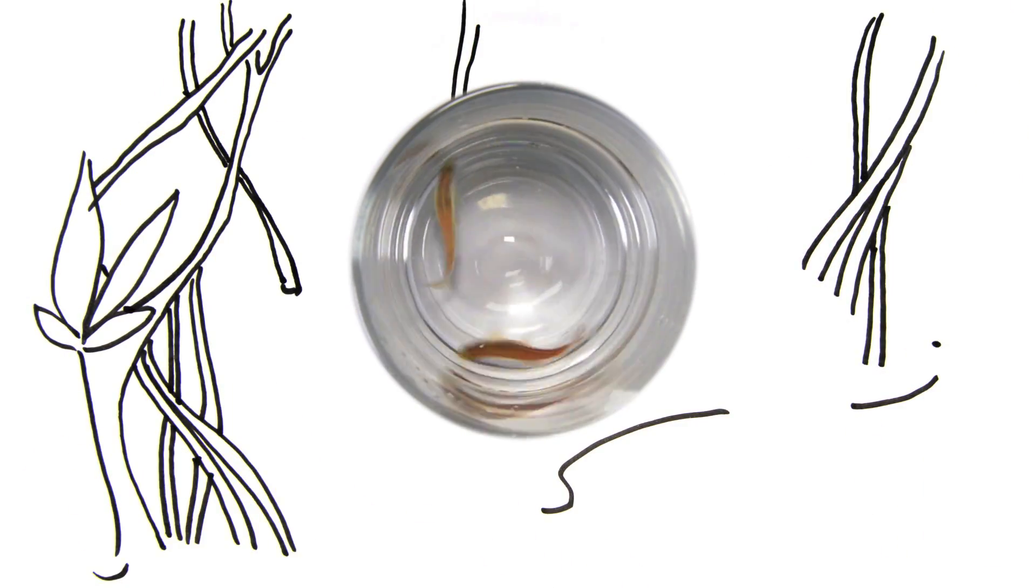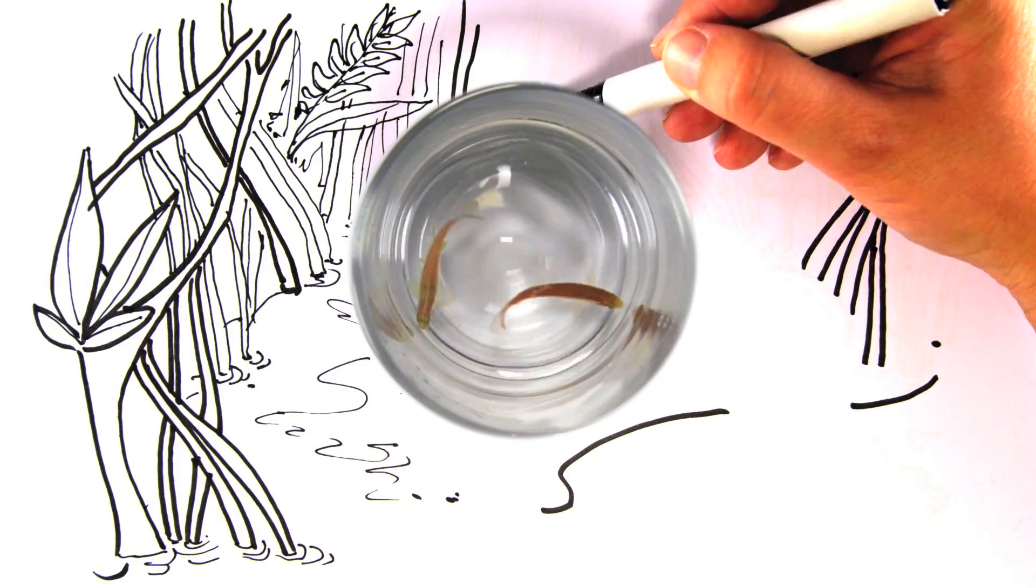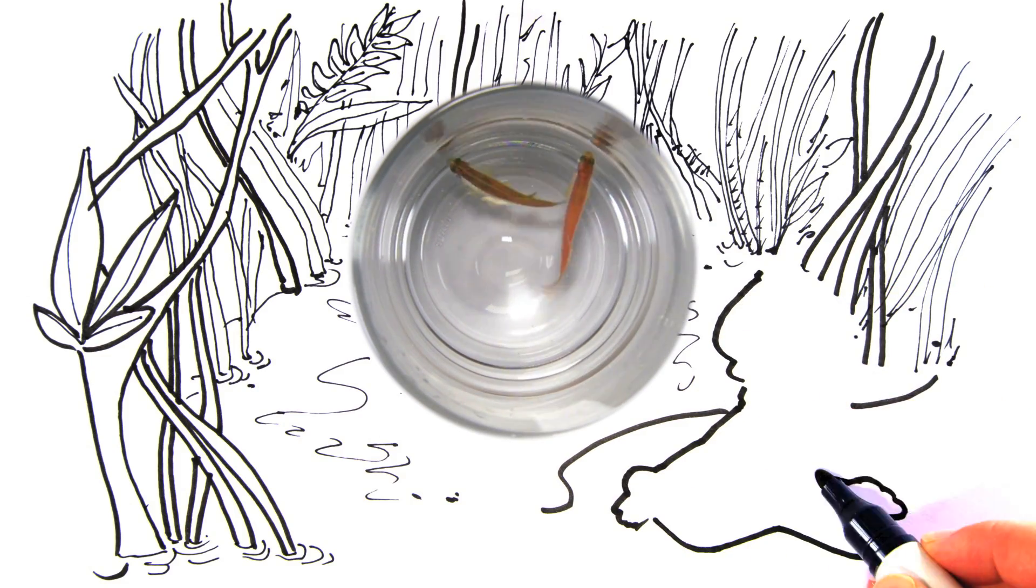Zebrafish are tiny inconspicuous fish that live in big numbers in sweet and brackish waters on the Indian subcontinent. Aquarists love them because they are undemanding and thrive in almost all conditions.